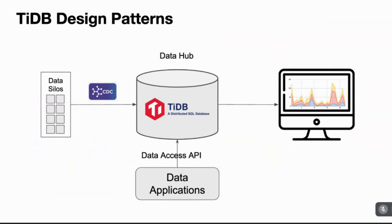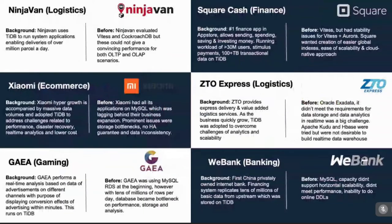TiDB is adopted across all kinds of industry use cases — banking, gaming, blockchain, e-commerce, logistics, fintech, social media, and entertainment. NinjaVan, one of the biggest logistics companies in Southeast Asia, headquartered in Singapore, runs system applications enabling deliveries of over millions of parcels a day on TiDB. They've expanded to Indonesia and Malaysia, with ever-growing data. Before TiDB, they evaluated Vitess and CockroachDB, but those could not deliver convincing performance for running transactions and analytical scenarios on one single system.